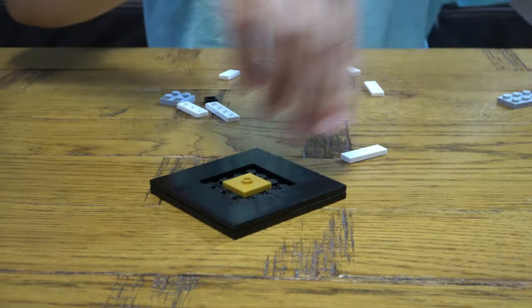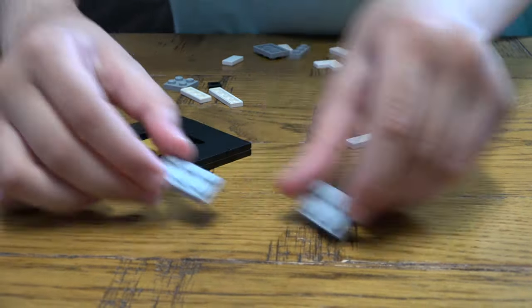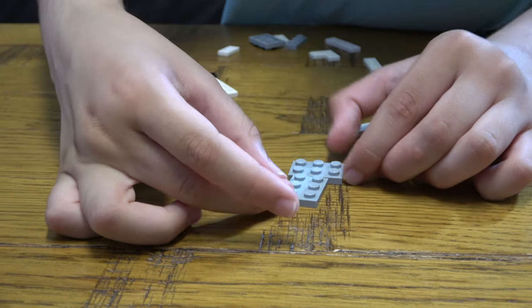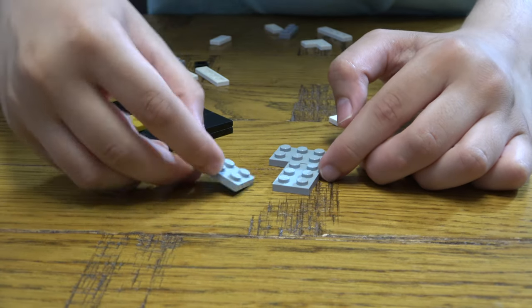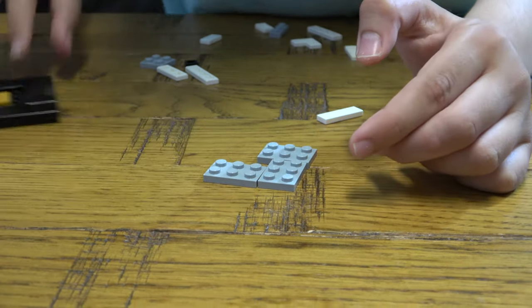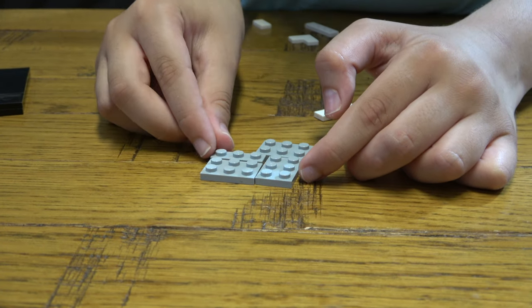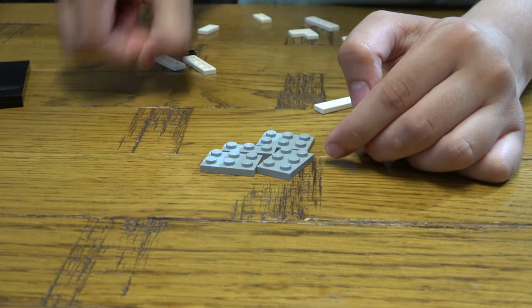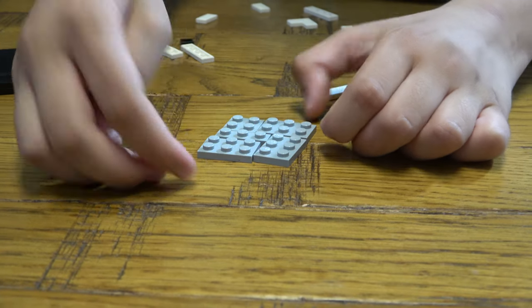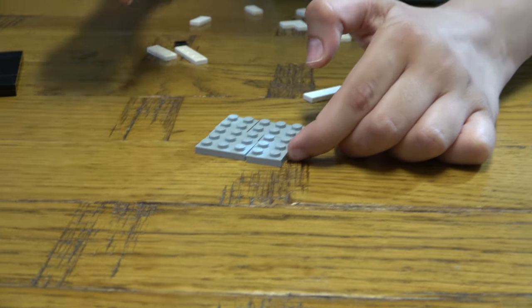Then you're going to place this here, and then you do this, this, and this. And then it will end up like a square.